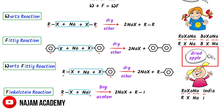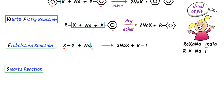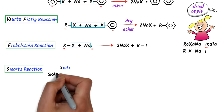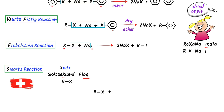Fifthly, consider Swarts reaction. In the word Swarts, I select S-A-R. This S-A-R reminds me of the Switzerland flag. R reminds me of RX (alkyl halide). The A-G and the flag remind me of Ag (silver). F and the flag remind me of F (fluorine). Silver reacts with halogen X to form silver halide, while fluorine and the alkyl combine to form alkyl fluoride. This is the Swarts reaction.